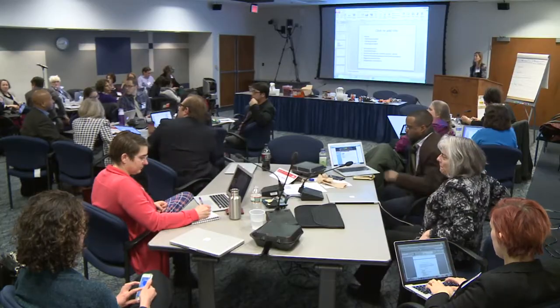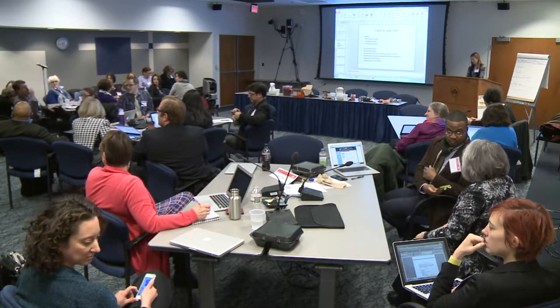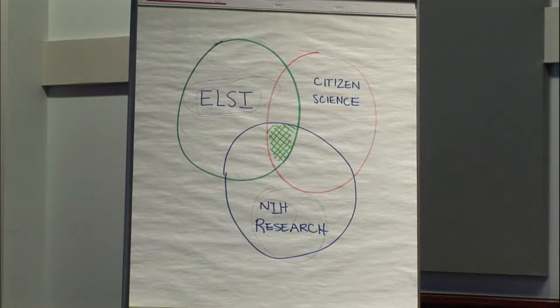I'll tell on Dave — or at least this is what I already told Dave — the Venn diagram given to us at the beginning of today is drawn incorrectly. It suggests there's part of NIH research that doesn't involve ELSI, and there's part of citizen science that doesn't involve ELSI, which is wrong. ELSI's circle needs to be bigger than the other two — everything involved in citizen science and NIH research is within ELSI, bringing it to be integrated rather than siloed.